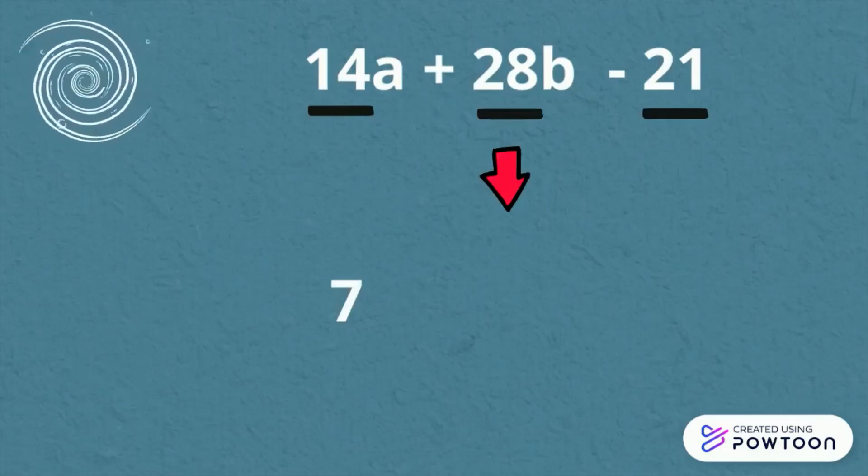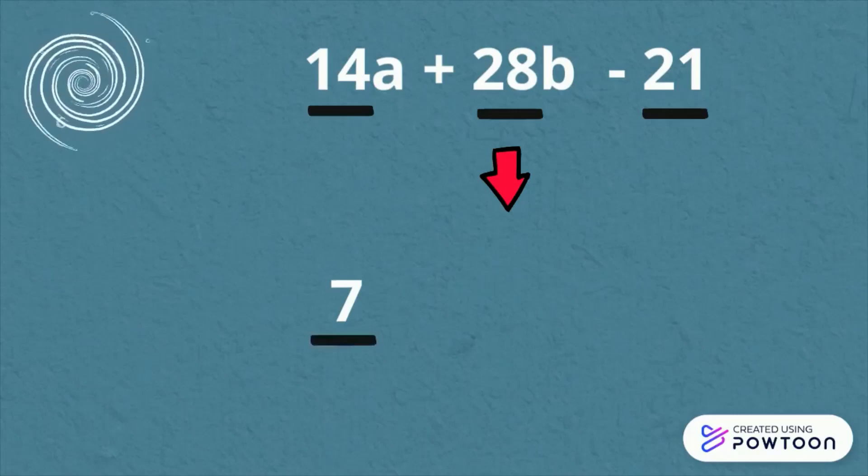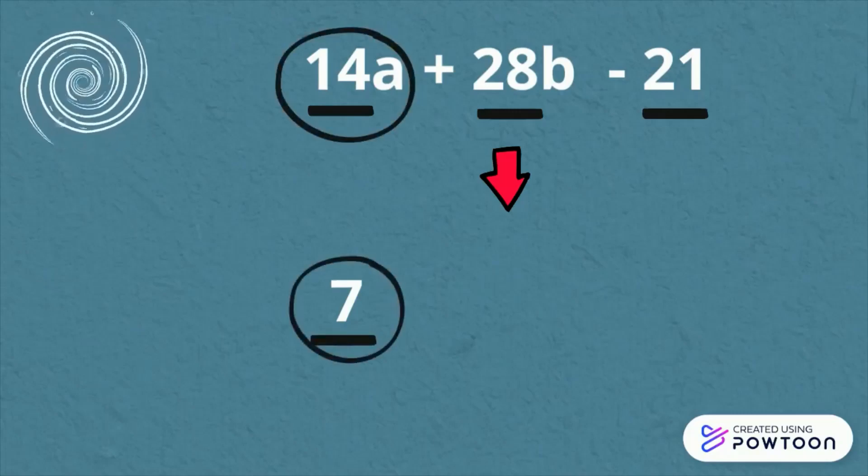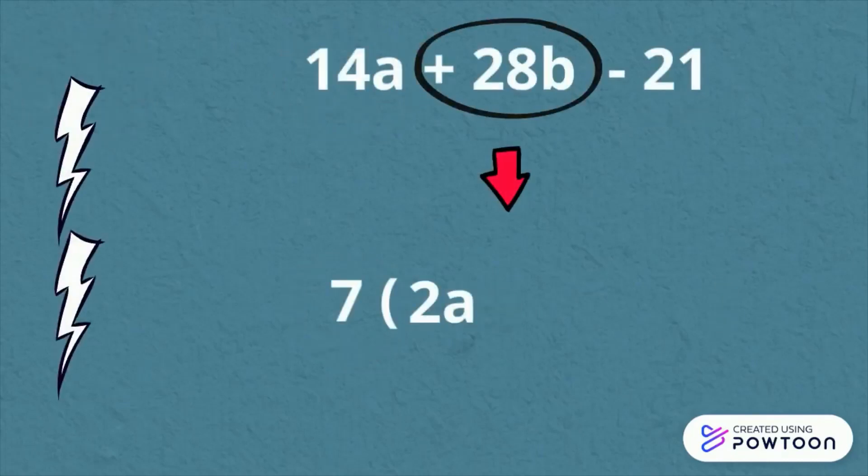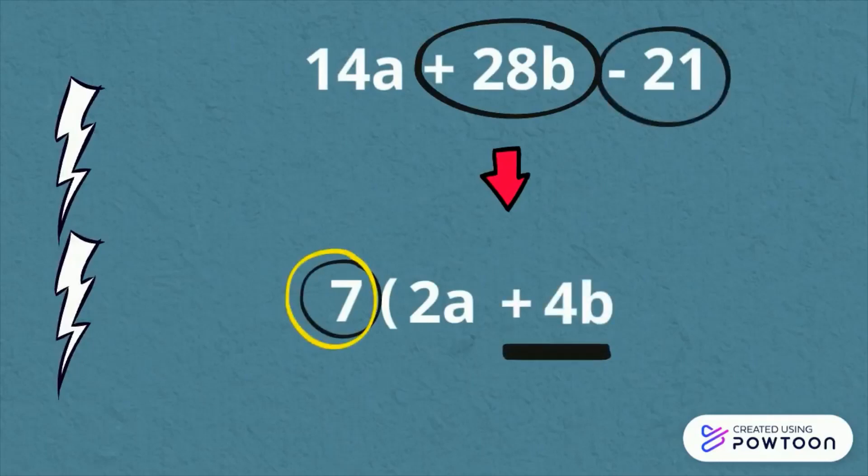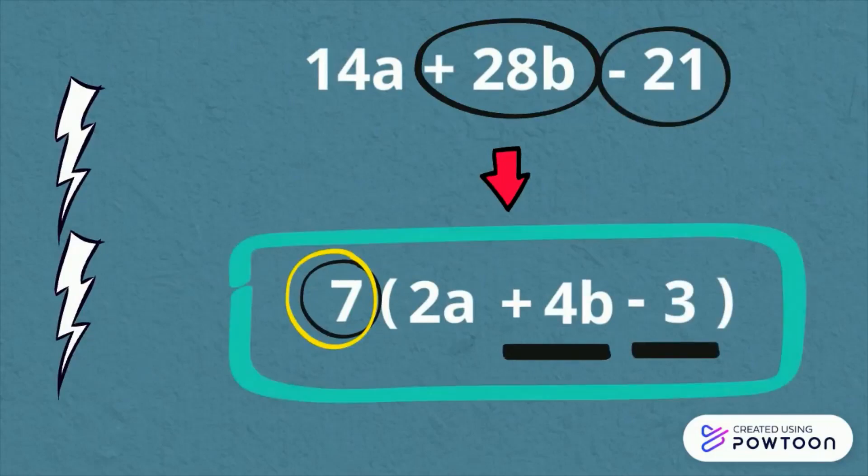There is no common factor in variables. The greatest common factor is 7. 14a divided by 7 is 2a. Positive 28b divided by 7 is 4b. And negative 21 by 7 is negative 3. The final answer is 7 quantity 2a plus 4b minus 3.